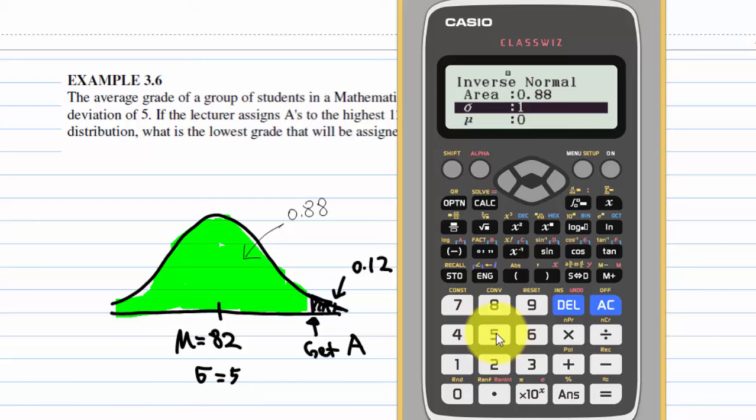And sigma is equal to 5, and the mean is 82. So press equal, then equal again.